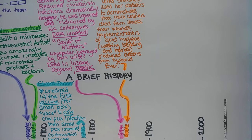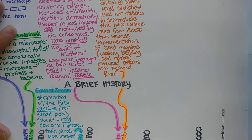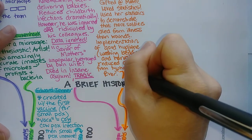Welcome back to part two of a brief history of microbiology. We're going to pick up now in the 1850s, about the same time as Florence Nightingale, and we're going to add a man named John Snow.